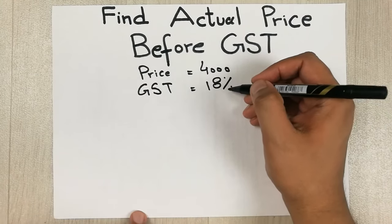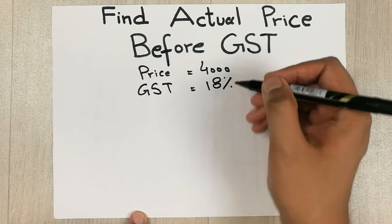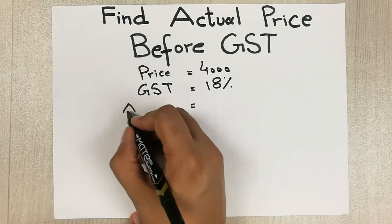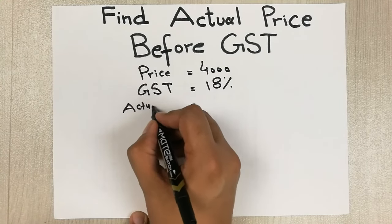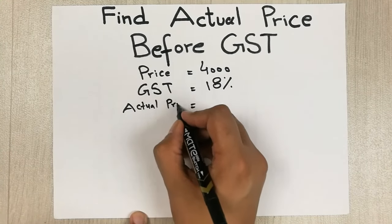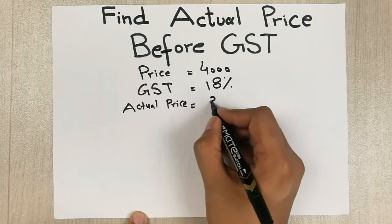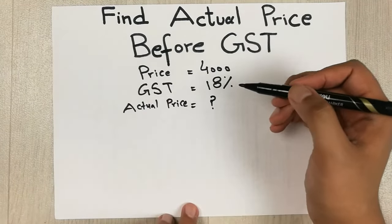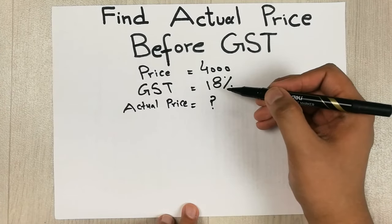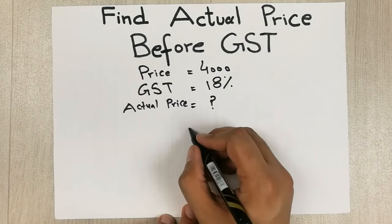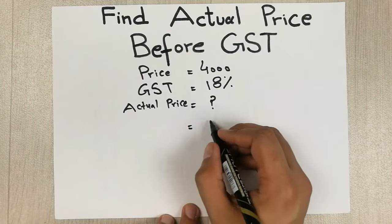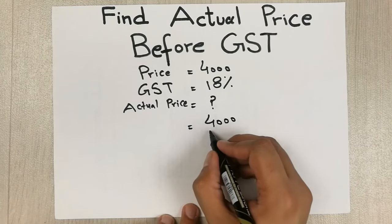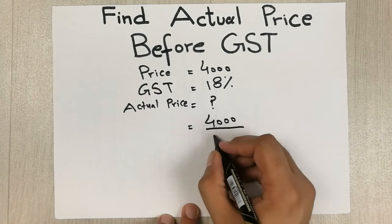The 18 percent is already included in that price. So how will you find out the actual price before this GST? You want to know how much the actual price is before GST is included. What you have to do is write four thousand and divide it by one hundred.